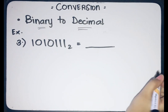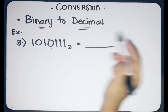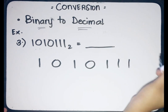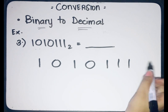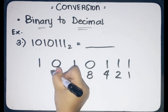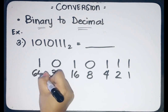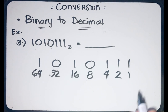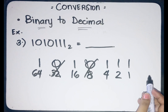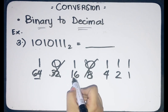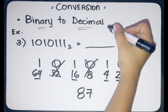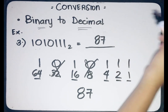Third example: we have binary 1010111. Let's rewrite it and identify the place values. Starting with 1, then 2, 4, 8, 16, 32, and 64. Disregard the place values whose corresponding bit is 0. Then add 64, 16, 4, 2, and 1, which equals 87. So 87 is the decimal equivalent of the given binary number.